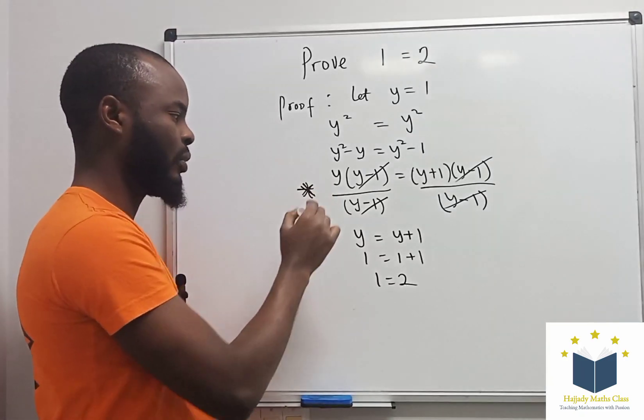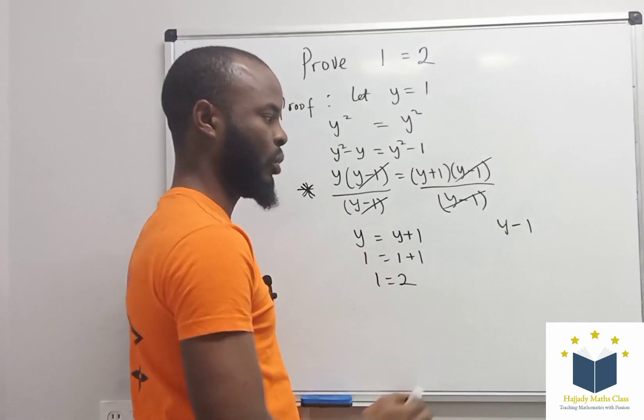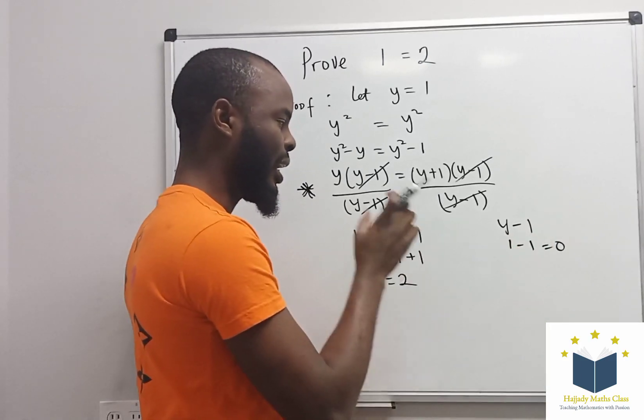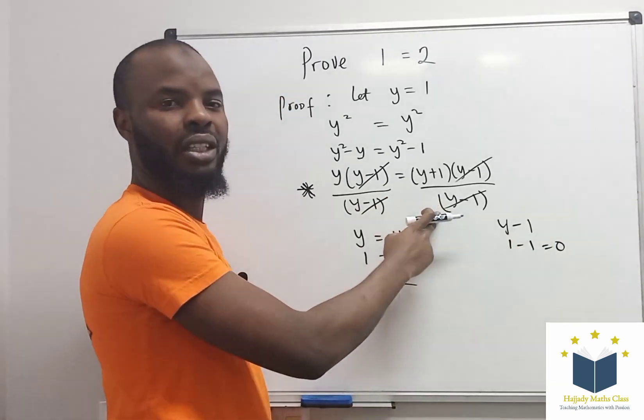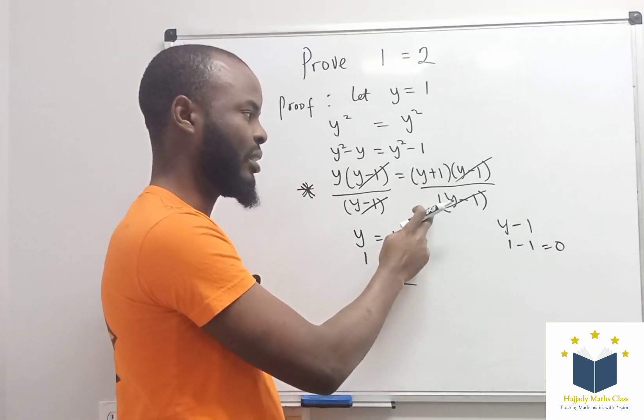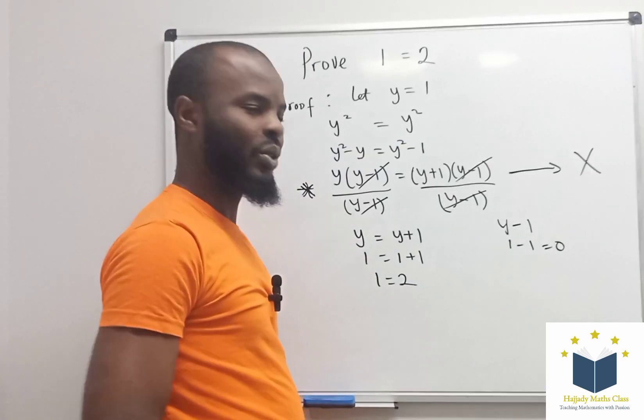But y is the same thing as 1, so (y - 1) equals zero. And the rule is that you can never divide by zero. So this step is wrong.